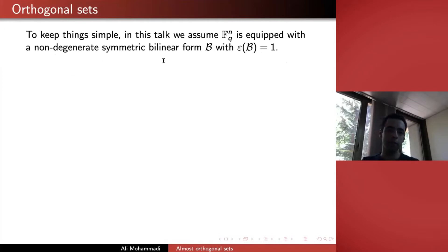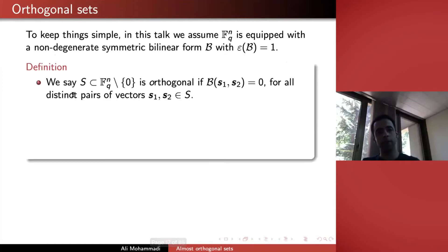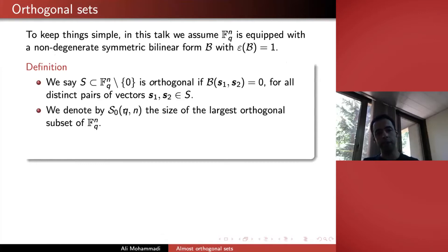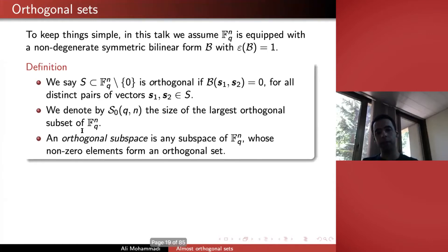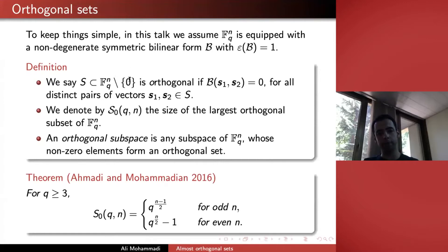We come to the definition of orthogonal sets. We fix epsilon_B to be 1. We say a subset of our vector space is orthogonal if for every two distinct tuples, the bilinear form is zero. We define S_0(Q,N) to be the largest orthogonal subset of FQ^N. A subspace is an orthogonal subspace if, taking out the zero vector, you get an orthogonal set. Ahmadi and Mohammadian proved in 2016 the exact size of orthogonal sets, for all non-degenerate symmetric bilinear forms.